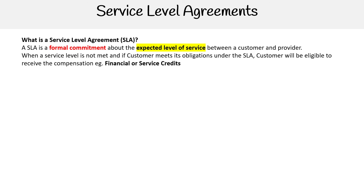Hey, this is Andrew Brown from Exam Pro. We are taking a look here at service level agreements, also known as SLA. An SLA is a formal commitment about the expected level of service between a customer and a provider. When a service level is not met, and if the customer meets its obligation under the SLA, customers will be eligible to receive compensation — financial or service credits. You can think of them as store credits, because you can use them towards most of the services provided by the CSP, whether it's compute, storage, databases, etc.